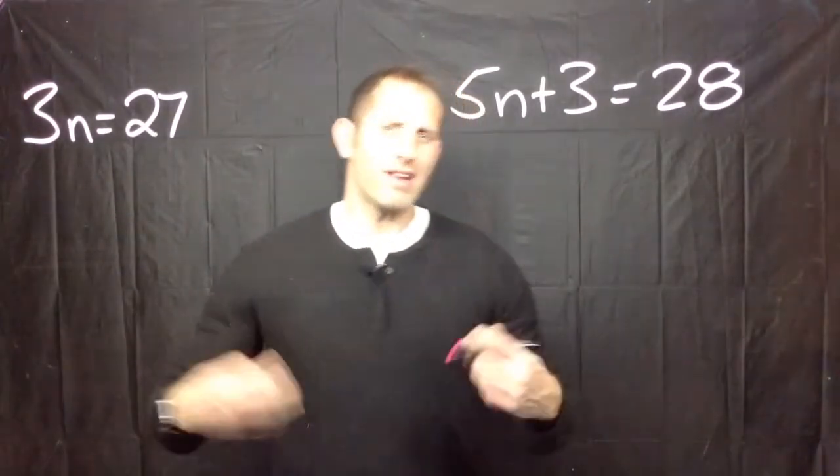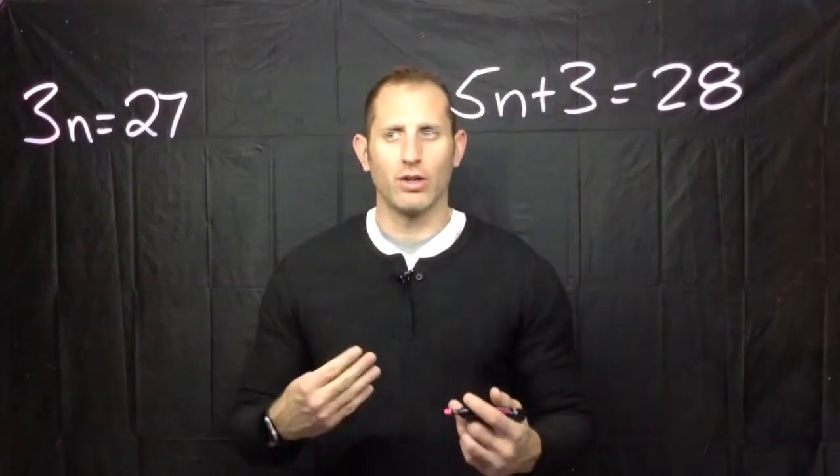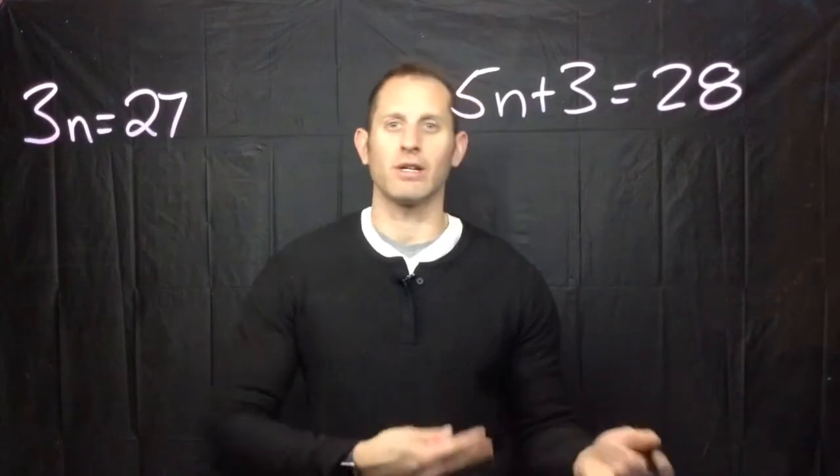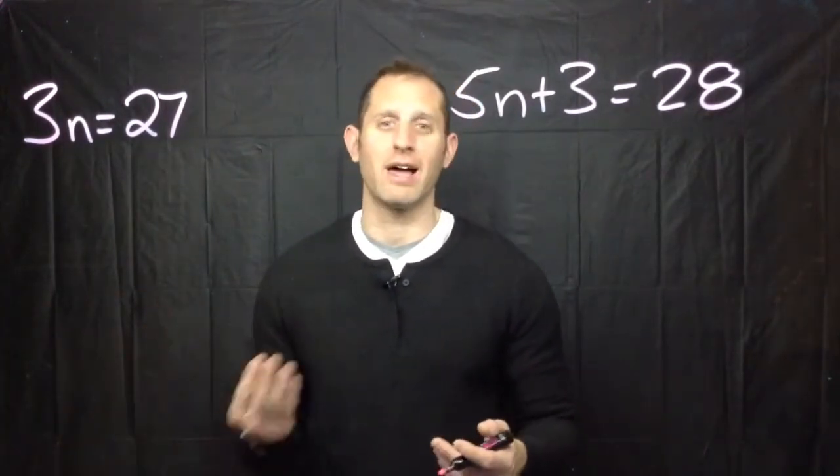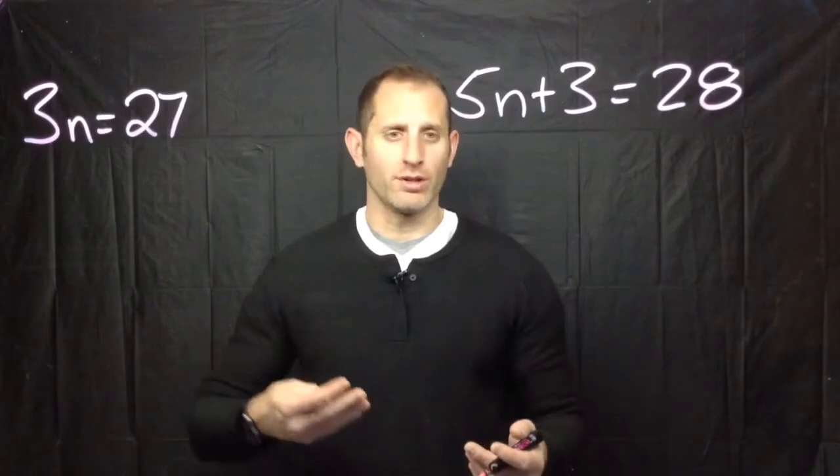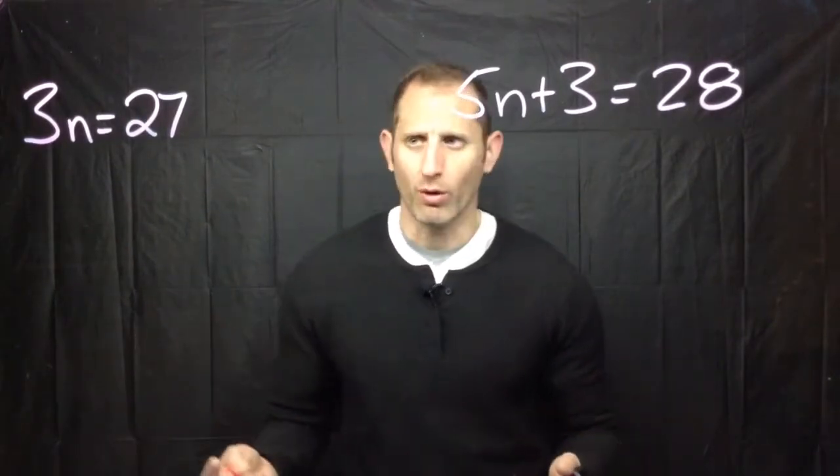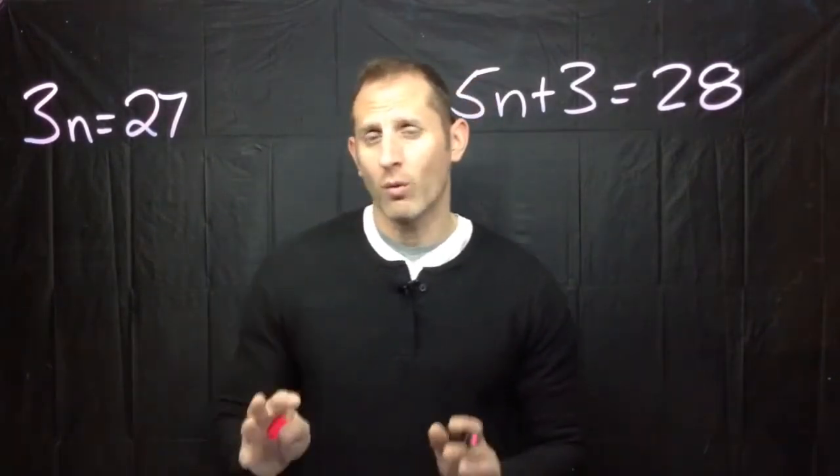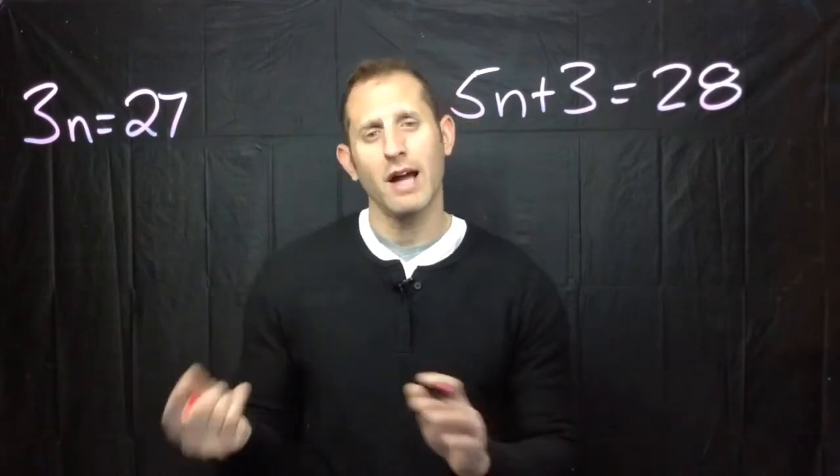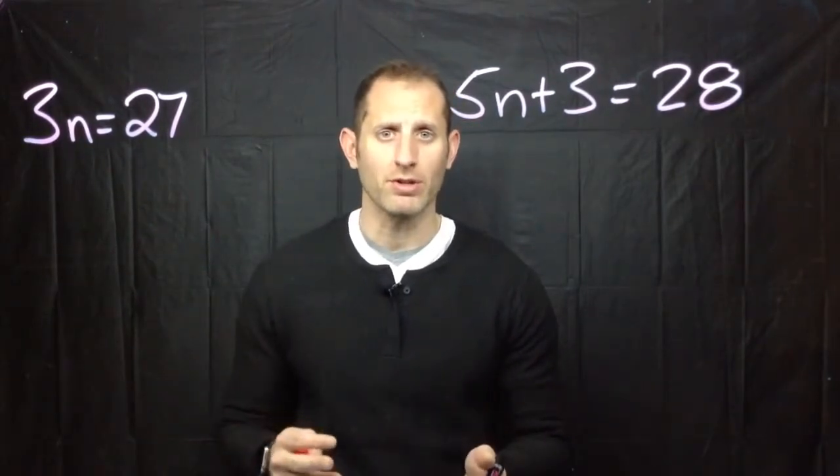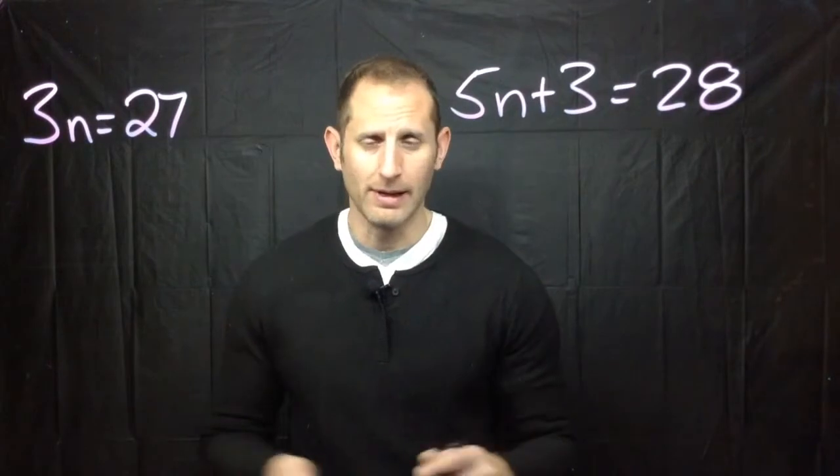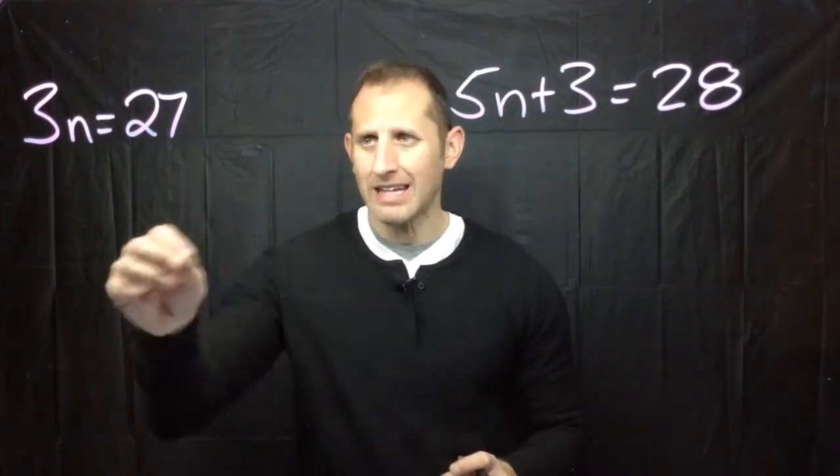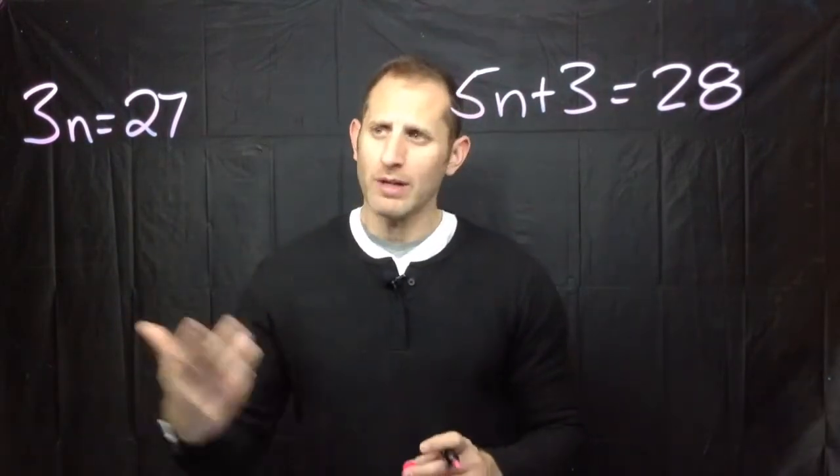If you remember anything about fact families when you were younger like 2 plus 3 equals 5 and therefore 3 plus 2 equals 5 and 5 minus 2 equals 3 and so on and so forth, it's no different than what we're doing here where we are rearranging some of the numbers in order to isolate our variable. That's what we want to do. We want to get n by itself. So how do we do that?